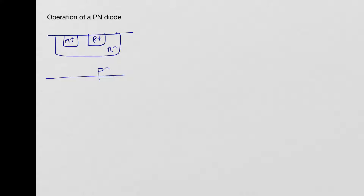If you look at this, the diode is formed between two points where this is the anode and this is the cathode. The actual diode operation happens between the P plus and the N minus — that is the PN diode we are looking at. The N plus is only for contacting the N well and bringing out the anode-cathode connection. This is the symbolic representation of the diode, showing the anode and the cathode.